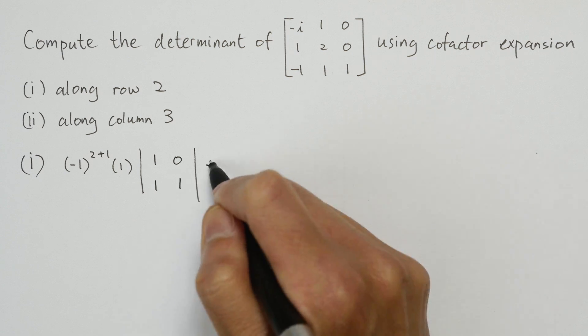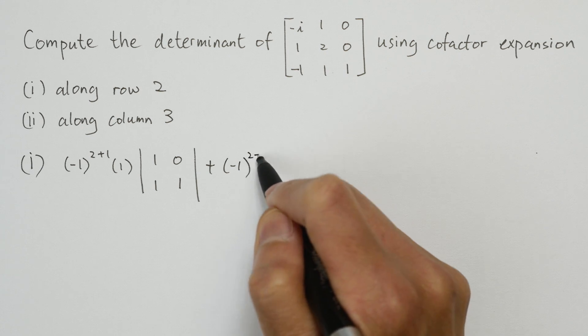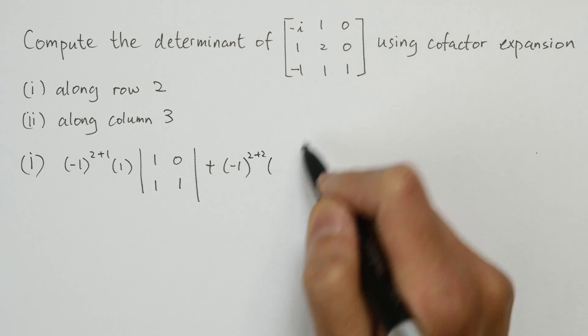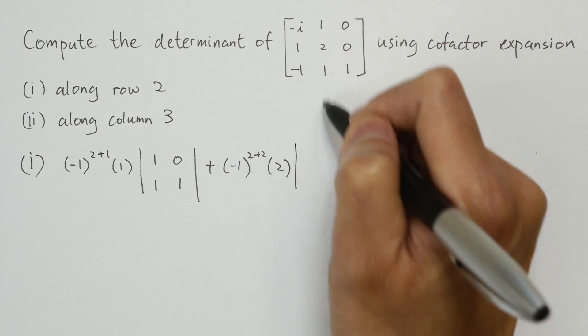The second term is minus 1 to the row index plus the column index of the second element, times the element itself, times the determinant of the matrix formed from deleting row 2 and column 2.